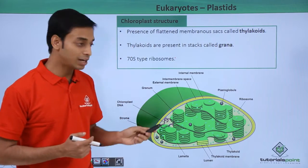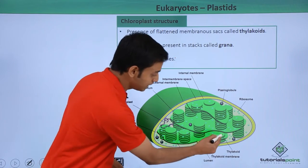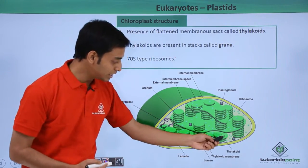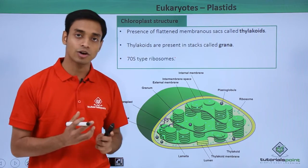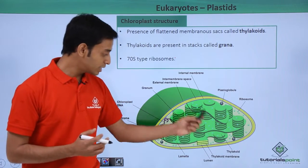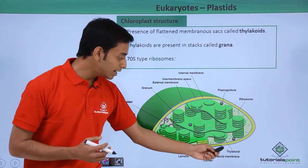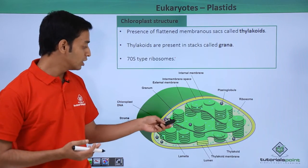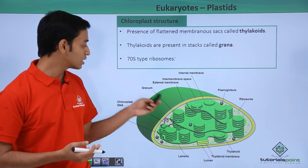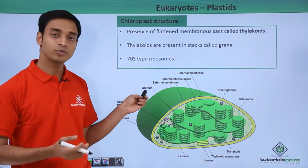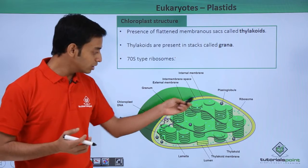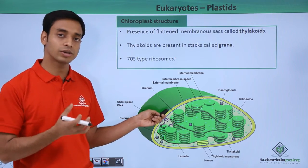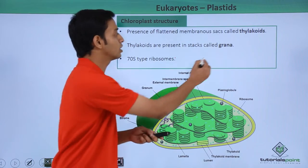The chloroplast also has flattened membranous sac-like structures known as thylakoids. Each of these flattened sac-like structures is called a thylakoid. These thylakoids are stacked together, and the whole stack is known as the granum.